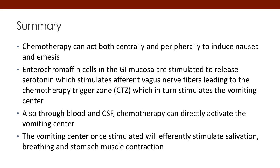Summarizing this part of the pathophysiology: chemotherapy can act both centrally and peripherally to induce nausea and emesis. The enterochromaffin cells in the GI mucosa are stimulated to release serotonin, which then stimulates the afferent vagus nerve fibers, leading to the CTZ — the chemotherapy trigger zone — and that in turn stimulates the vomiting center. Additionally, through blood and CSF, chemotherapy can act directly on the vomiting center through a central mechanism.